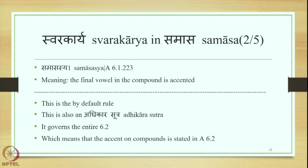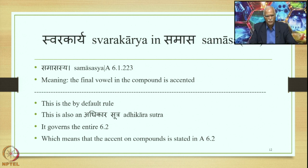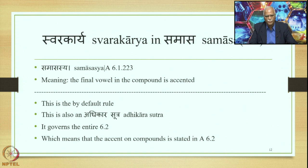We have a Sutra, Samasasya, 6-1-223, the final Sutra of 6-1, and this continues in the entire 6-2, which consists of 199 Sutras. What Samasasya means is that the final vowel in the compound is accented. This is over and above the accent of the constituents of the compound, as we shall see in the example of Rajapurusha. Samasasya is the by-default rule and also an Adhikara Sutra, which governs the entire 6.2, meaning that the accent on compounds is stated in 6.2.